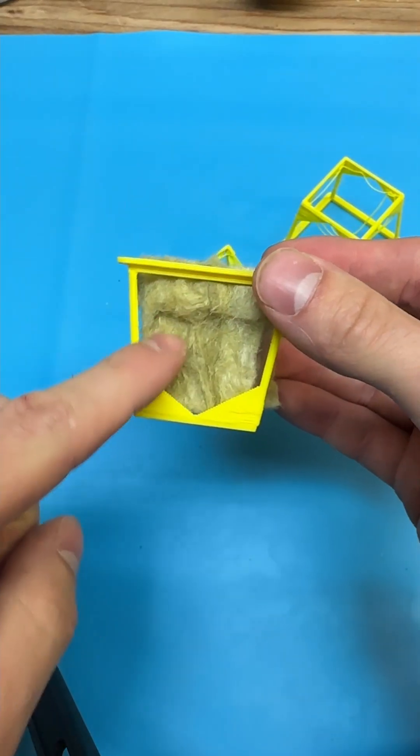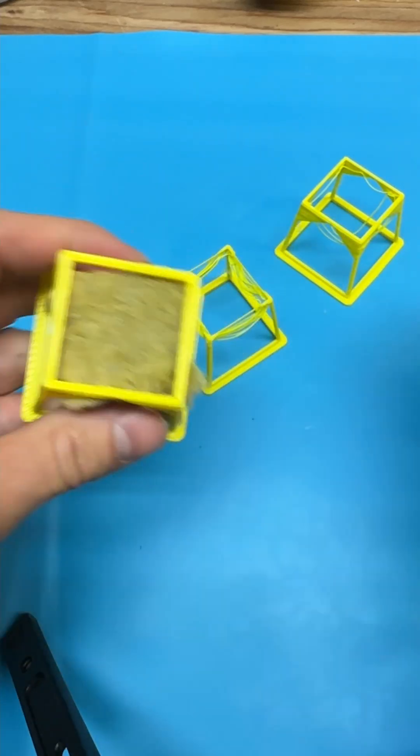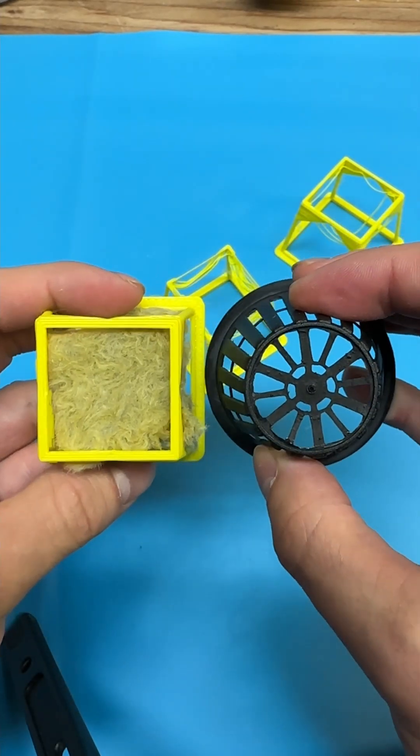And now the roots have a ton of space to come out the sides and out the bottom and they aren't restricted like this one.